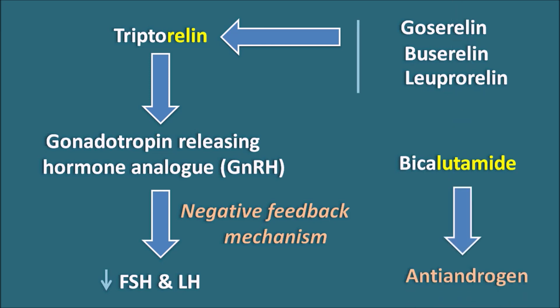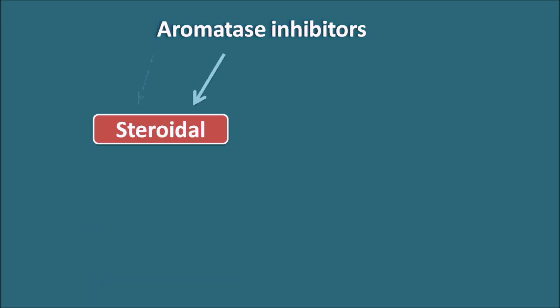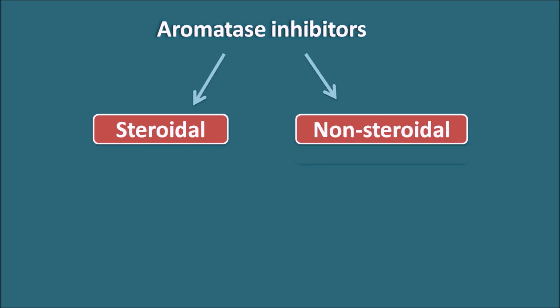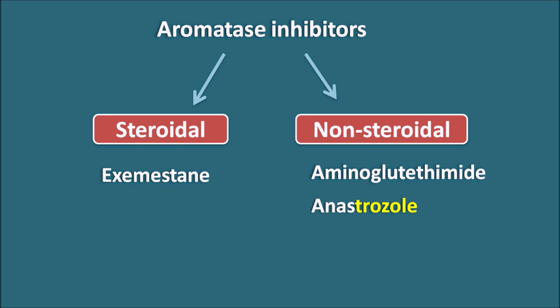Aromatase inhibitors are of two types: steroidal and non-steroidal. The steroidal type includes exemestane. Non-steroidal types include aminoglutethimide (first-generation) and newer agents anastrozole and letrozole. The suffix '-trozole' identifies aromatase inhibitors.